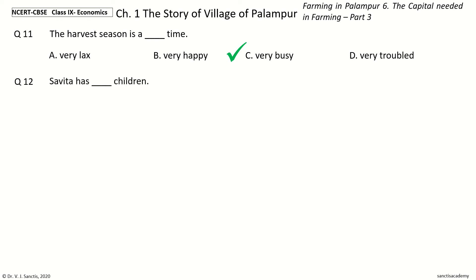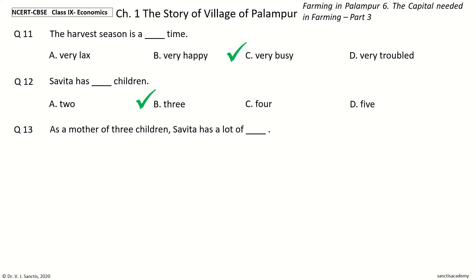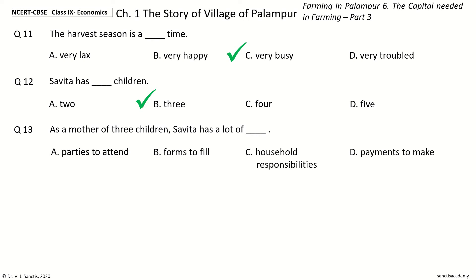Question 12. Savita has Dash children. The options are: 2, 3, 4, 5. And the answer is Three. So, Savita has 3 children. Question 13. As a mother of 3 children, Savita has a lot of Dash. The options are: Parties to attend, Forms to fill, Household Responsibilities, Payments to make. And the answer is Household Responsibilities. So, as a mother of 3 children, Savita has a lot of Household Responsibilities.